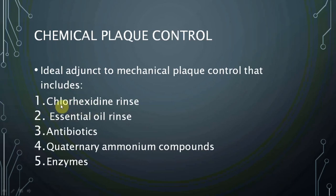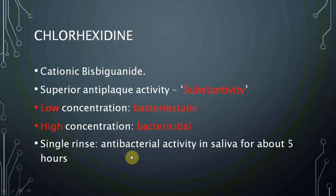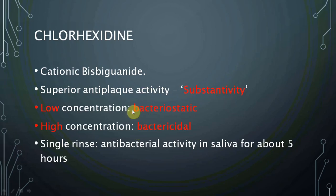For chemical plaque control, the most common agent is chlorhexidine, followed by essential oils, antibiotics, quaternary ammonium compounds, and enzymes. Chlorhexidine is a cationic bisphenol with superior anti-plaque activity. It has substantivity — meaning it is retained on oral structures for a period of time. At low concentration it is bacteriostatic, and at high concentration it is bactericidal.